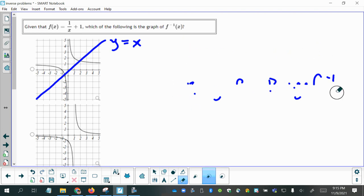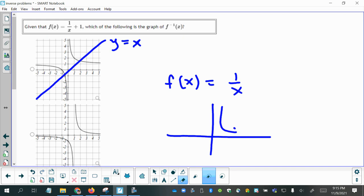So remember the reciprocal function, f of x equals 1 over x, and that on the xy plane looks like this, where it has a vertical asymptote on the y-axis and a horizontal asymptote at the x-axis.